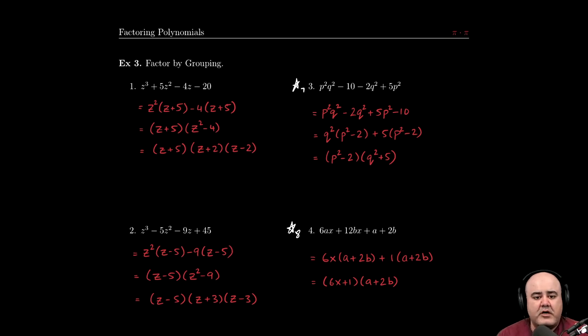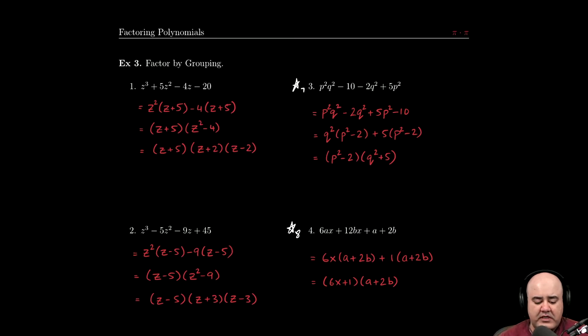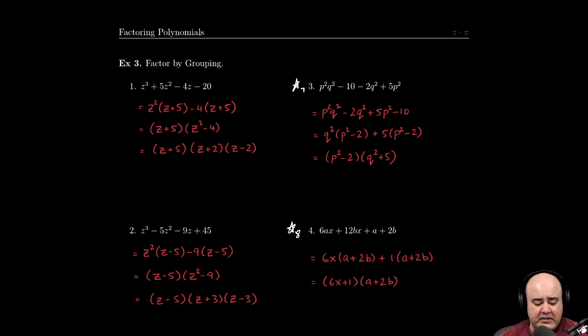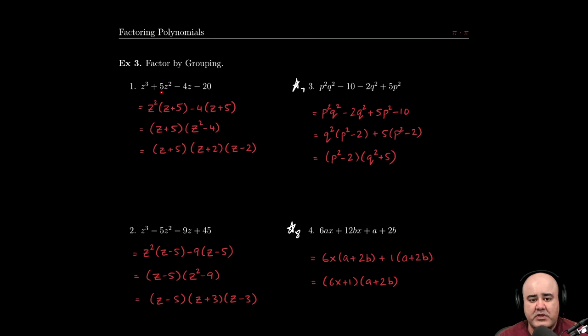Let's continue with a couple of problems on factoring by grouping. As before, you want to start by thinking of GCF, and once you've found that there's no GCF, or once you've factored the GCF out, you want to look at how many terms we have. In these problems, we have four terms, so these are traditionally solved by grouping. And the way we do that is by grouping the first two terms together, and then the last two terms together.